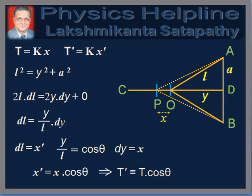First, we will derive an expression for the time period in general for angle AOB equal to 2 theta, and then apply it to the specific angles given in the question. The body is displaced from O to P such that OP is equal to X. Due to this, spring OC is compressed by X. From symmetry, we assume that the elongations produced in springs OA and OB are equal; let it be equal to X dash.